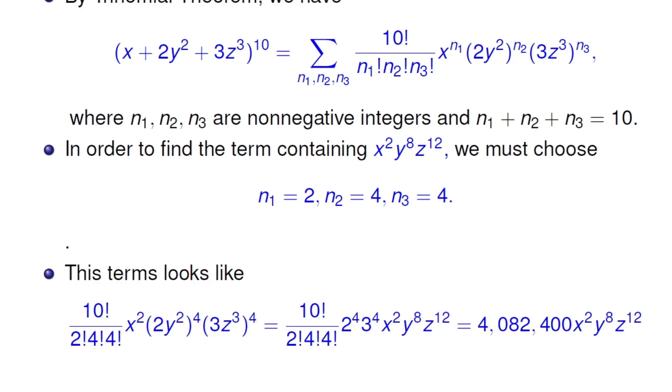Now in other words, the term looks like the following. 10 factorial over 2 factorial, 4 factorial, 4 factorial, x squared, 2y squared raised to power 4, 3z cubed raised to power 4.